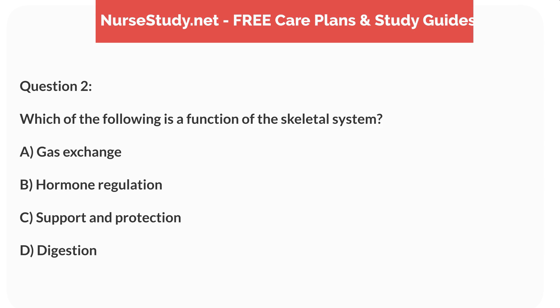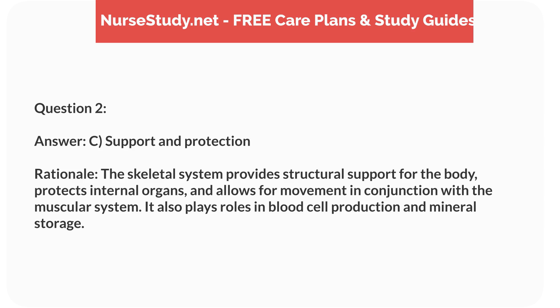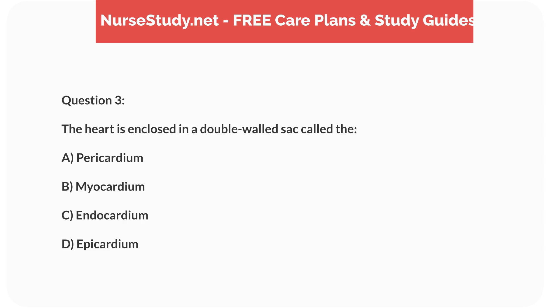Question 2: Which of the following is a function of the skeletal system? A) gas exchange, B) hormone regulation, C) support and protection, D) digestion. Answer: C, support and protection. Rationale: The skeletal system provides structural support for the body, protects internal organs, and allows for movement in conjunction with the muscular system.